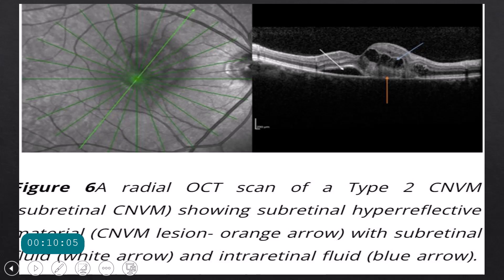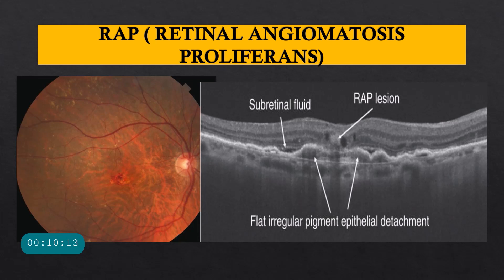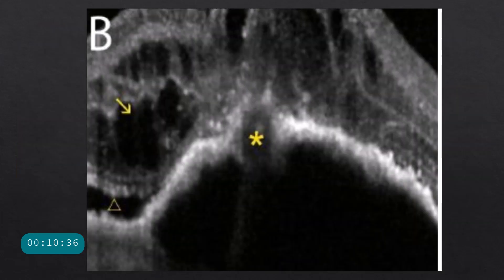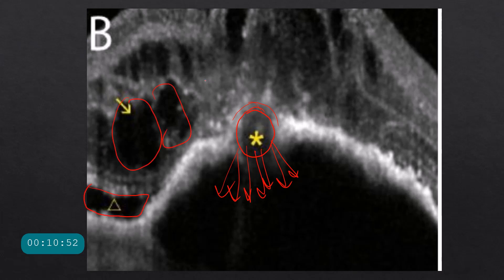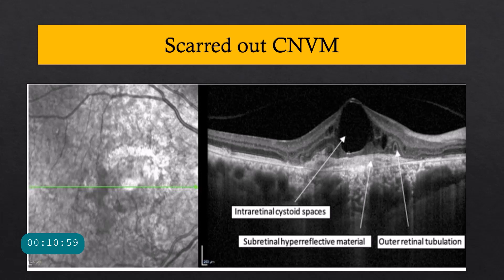Type 3 CNVM is retinal angiomatous proliferans (RAP), in which the hyperreflective lesion starts from within the retina itself and then progresses toward the sub-RPE zone and choroid, where anastomosis develops. You can see the retinal lesion with adjacent flat pigment epithelial detachments. Sometimes you can even see a blood vessel — it will be hyperreflective but cause back shadowing by blocking light. Associated subretinal and intraretinal fluid are present, and the hyperreflective material represents the RAP lesions.